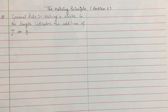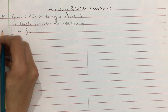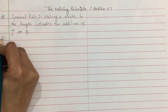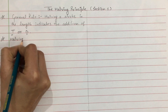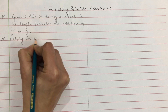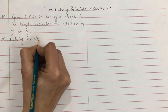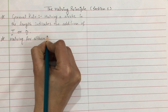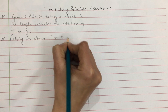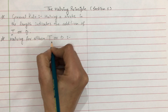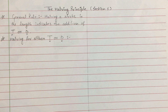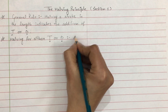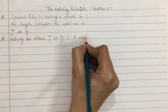This is the general rule. Further rules: halving for either T or D — दोनों में से किसी के लिए भी half किया जा सकता है। A stroke having a final hook or a joint diphthong may be halved for either T or D.